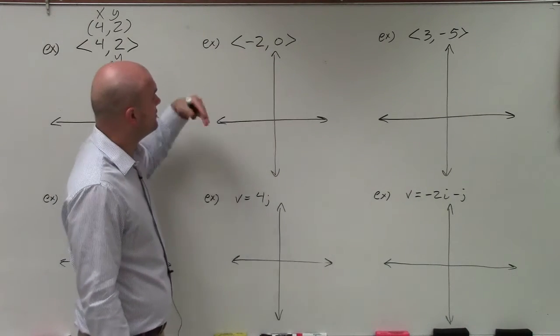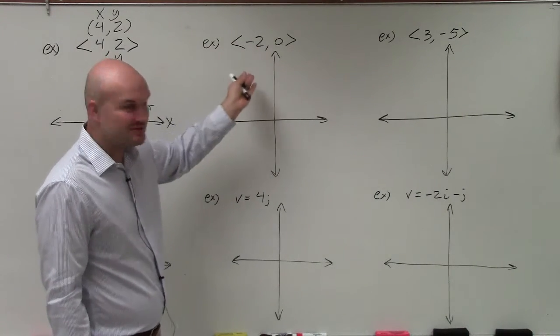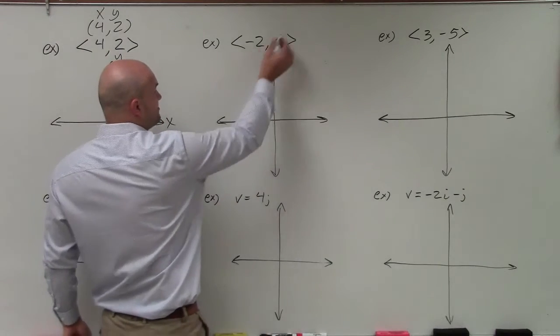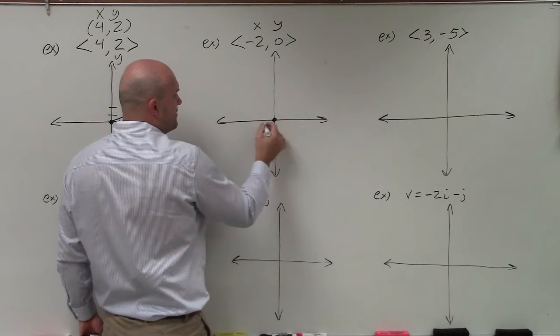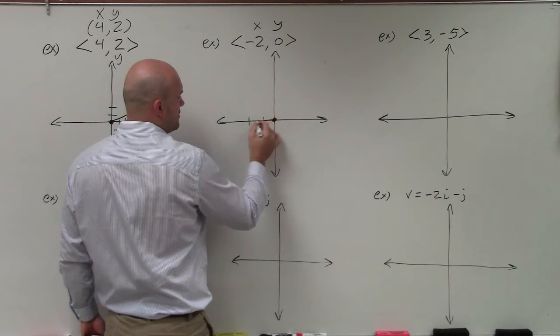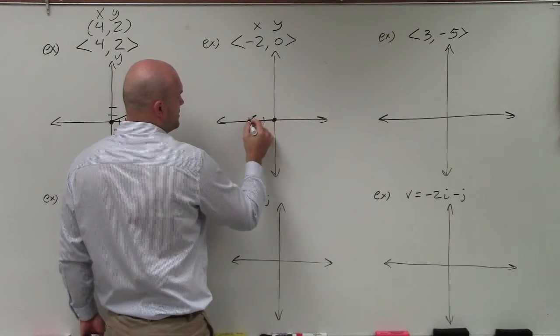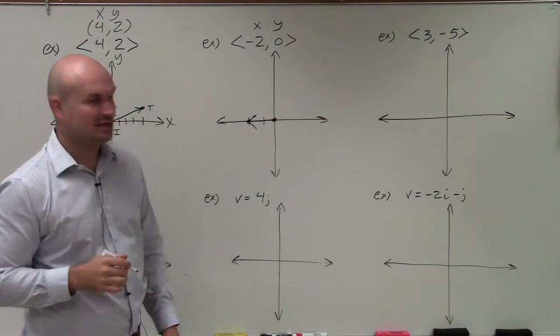Over here, you can look at this and say, this one's (-2,0). That means I'm going to the left, but I'm not going up or down at all. So again, I started at (0,0), and then I'm just going to go to the left 2. There's my terminal point, going out to the left.